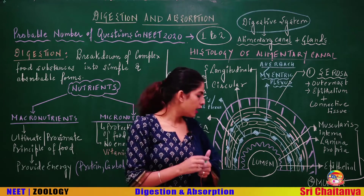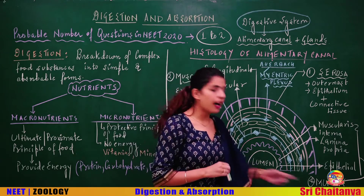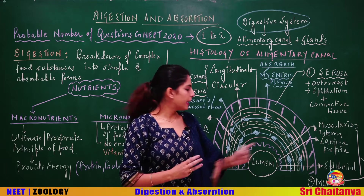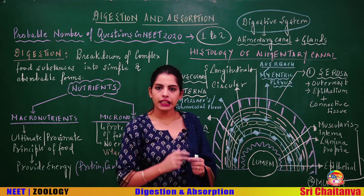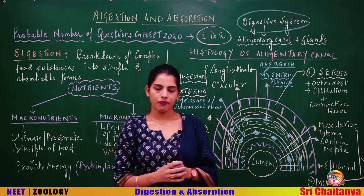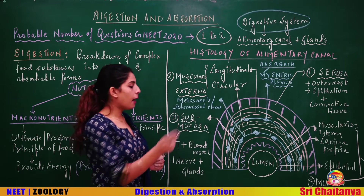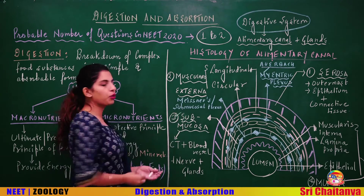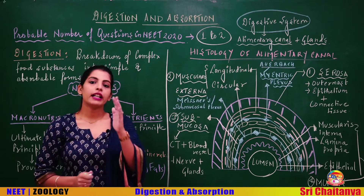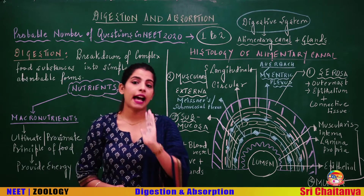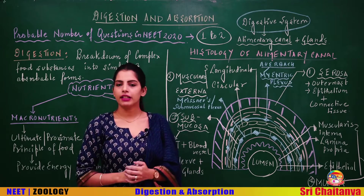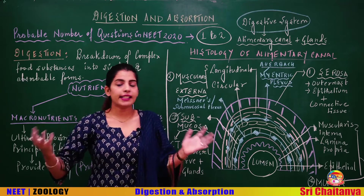So the innermost layer, mucosa, is composed of three layers: the epithelial layer closest to the lumen, then lamina propria of connective tissue, then smooth muscles — muscularis interna. Moving outward, the next layer is submucosa, which is composed of connective tissue and contains blood vessels, nerves, and possibly some glands.